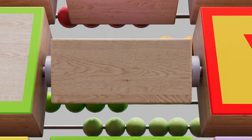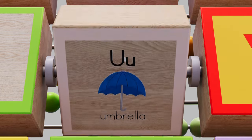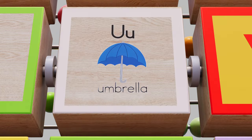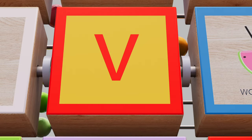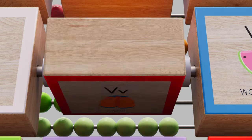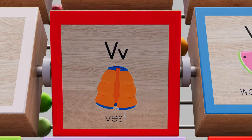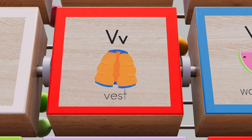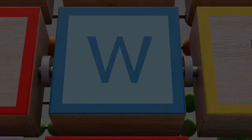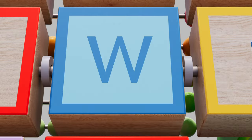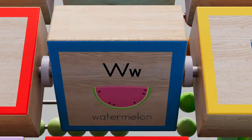U for umbrella, V for vest, W for watermelon.